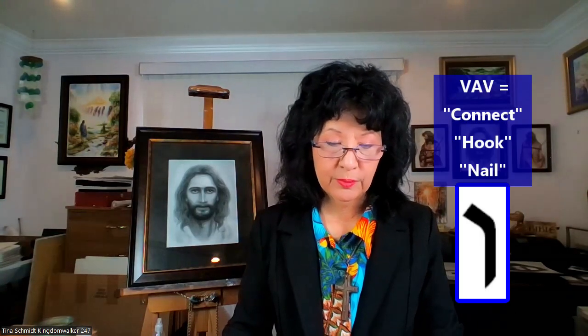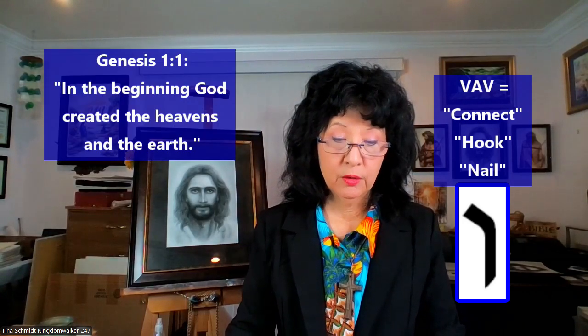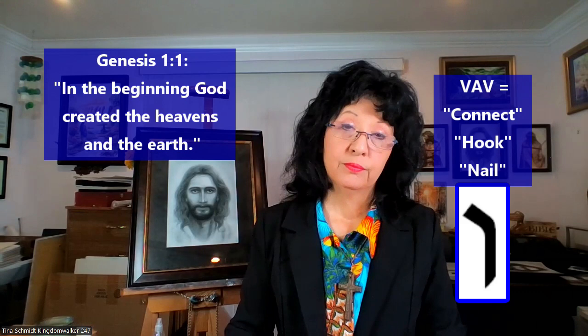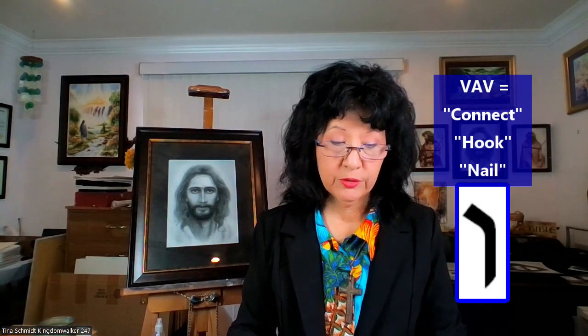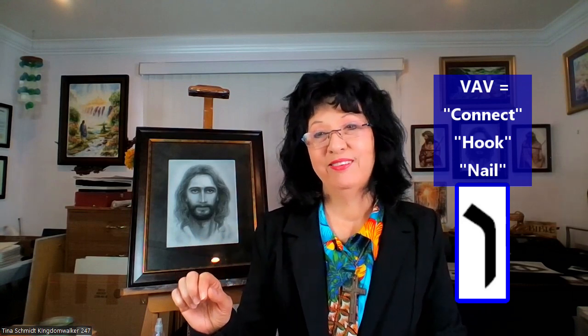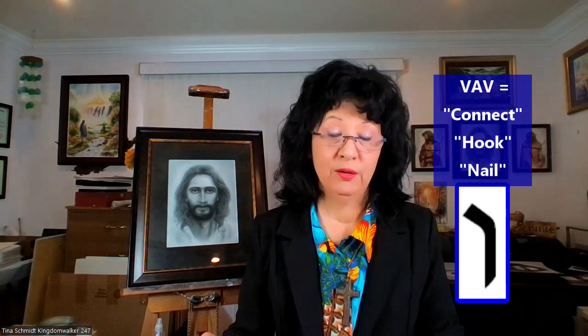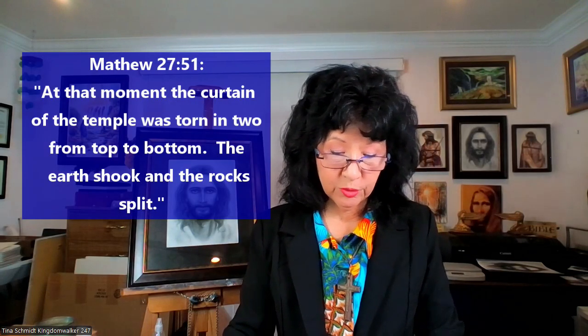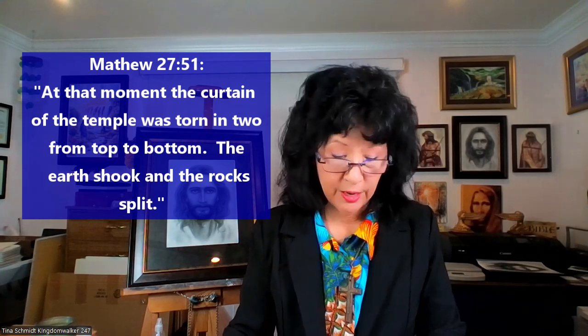We'll go into the letter Vav a little deeper here. It means to connect. The first time we see this letter is in Genesis 1:1, where it connects the words heaven and earth. So Jesus came to bring heaven to earth — He's the connection for that. It has the hook on it, and He was hung on the cross. It also means nailed. It connects heaven to earth through the sacrifice of the Savior. Upon His death, the tabernacle curtain was torn supernaturally from top to bottom, connecting heaven to earth and opening the sacred places of heaven.